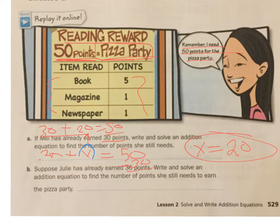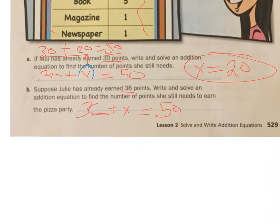I'm going to erase some of this because we need to see the second problem. Suppose Julie has already earned 36 points. Write and solve an addition equation to find the number of points she needs to earn a pizza party. So we're talking about the same pizza party of 50 points. Now, we know she has 36 plus however more she needs. We'll call that X also. We just have to solve for X. I want to get this X all alone so I know how many she needs.